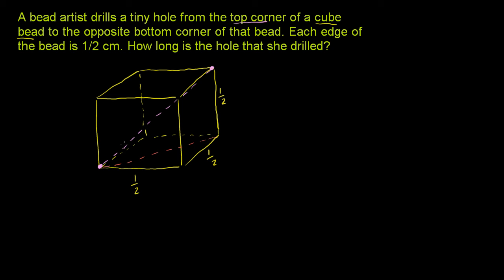If you think of it that way, then all of a sudden we have a right triangle going across this cube. This is a right angle over here. We know what this length is — it's 1½ centimeters. If we could figure out the length of this orange side going diagonally across the base of the cube, then we could use the Pythagorean theorem to figure out the longest diagonal of the cube.